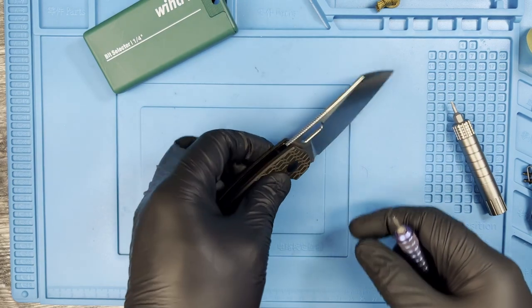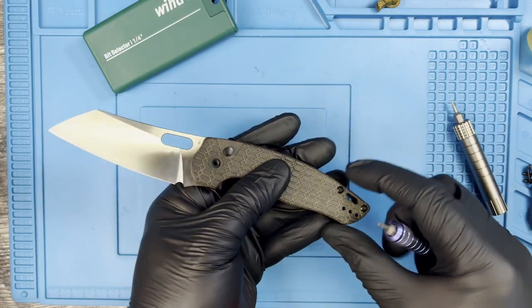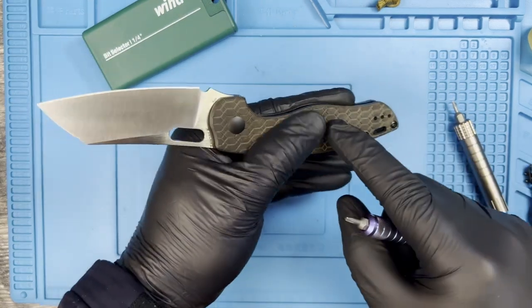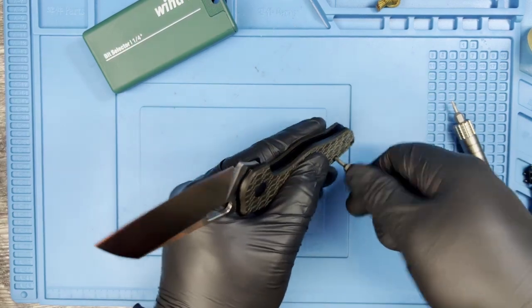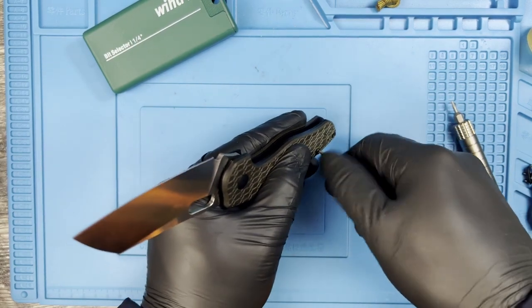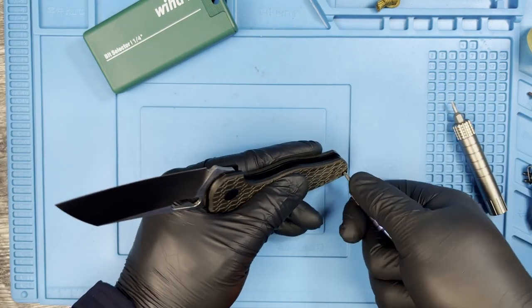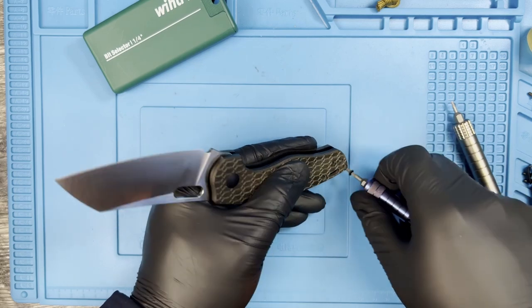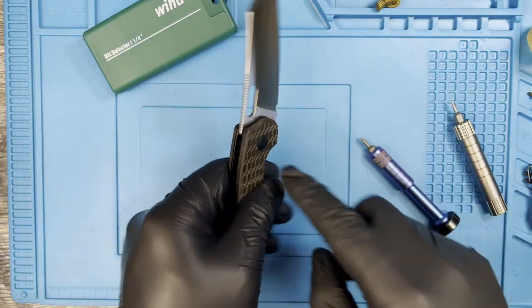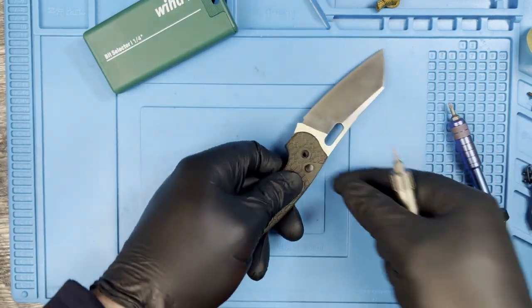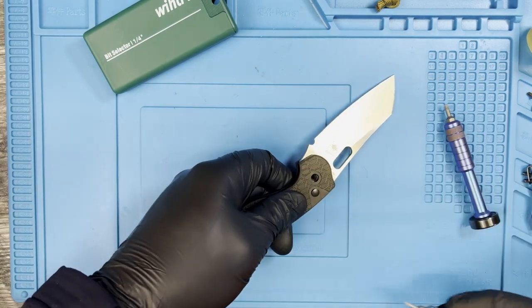So with the lock disassembled, you can go ahead, actually just leave that there for now. Go ahead, put some tension on this scale and then go ahead and break your screws loose on this side. It'll all make sense here in a minute. I promise. Now with that all done, what you want to do is keep tension here.